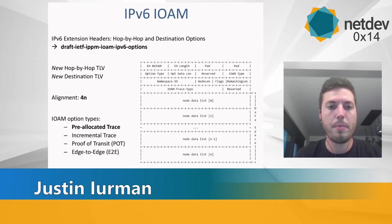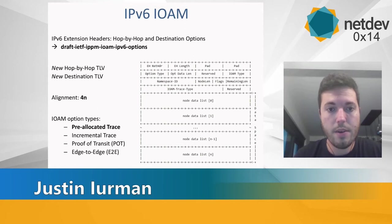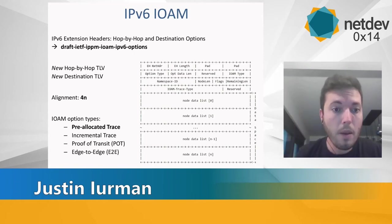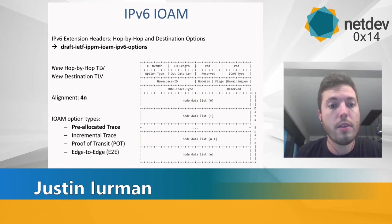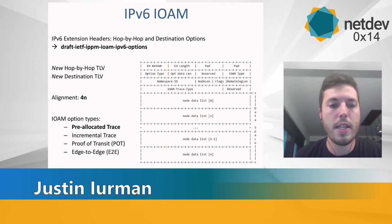Now that you have a big picture of IOAM, let's focus on IPv6 as the encapsulation protocol. There is a specific draft for that called 'IOAM IPv6 Options.' This draft defines two new TLVs: one for a hop-by-hop extension header and one for a destination extension header. Those two new values have already been allocated by IANA, so you can find them on their website or inside the patch I have submitted.